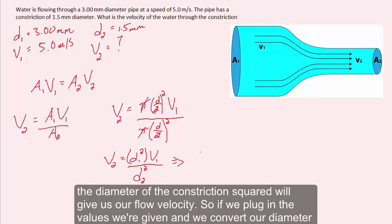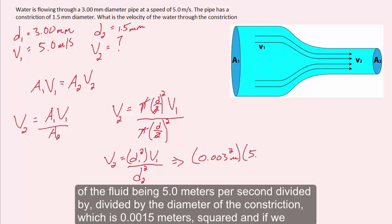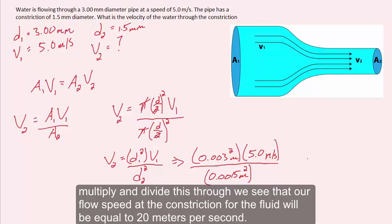Plugging in the values and converting from millimeters to meters, we have 0.003 meters squared times the flow speed of 5.0 meters per second, divided by 0.0015 meters squared. Multiplying and dividing through, we find that the flow speed at the constriction is equal to 20 meters per second.